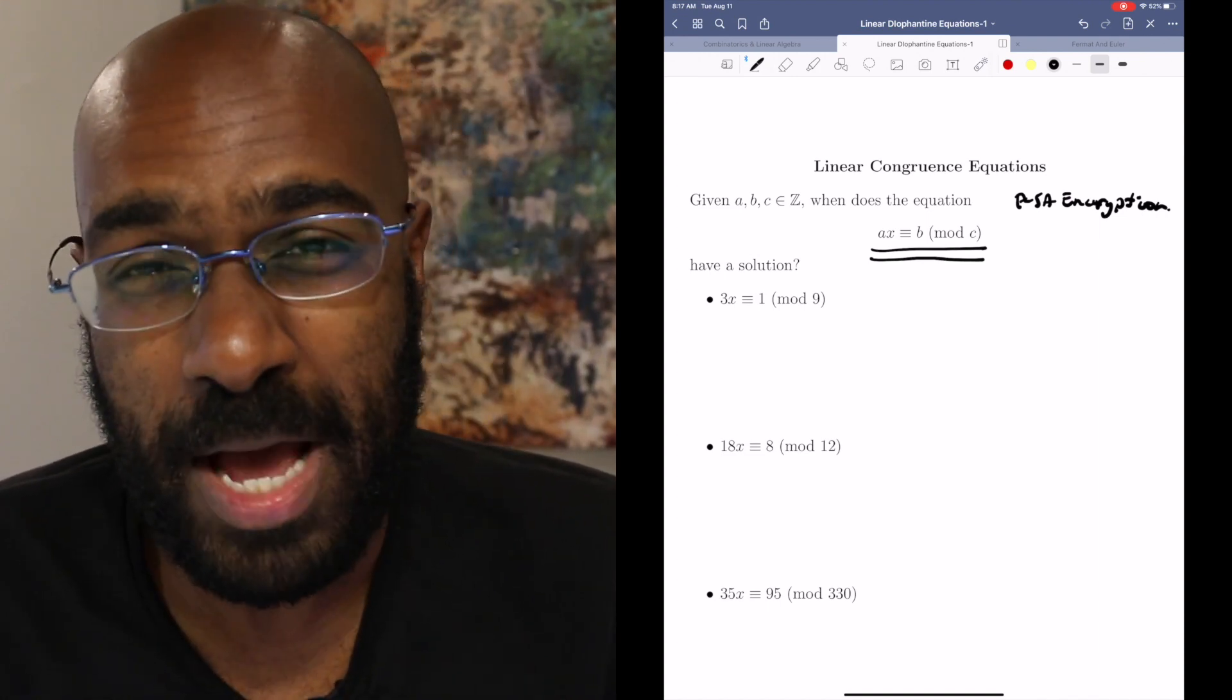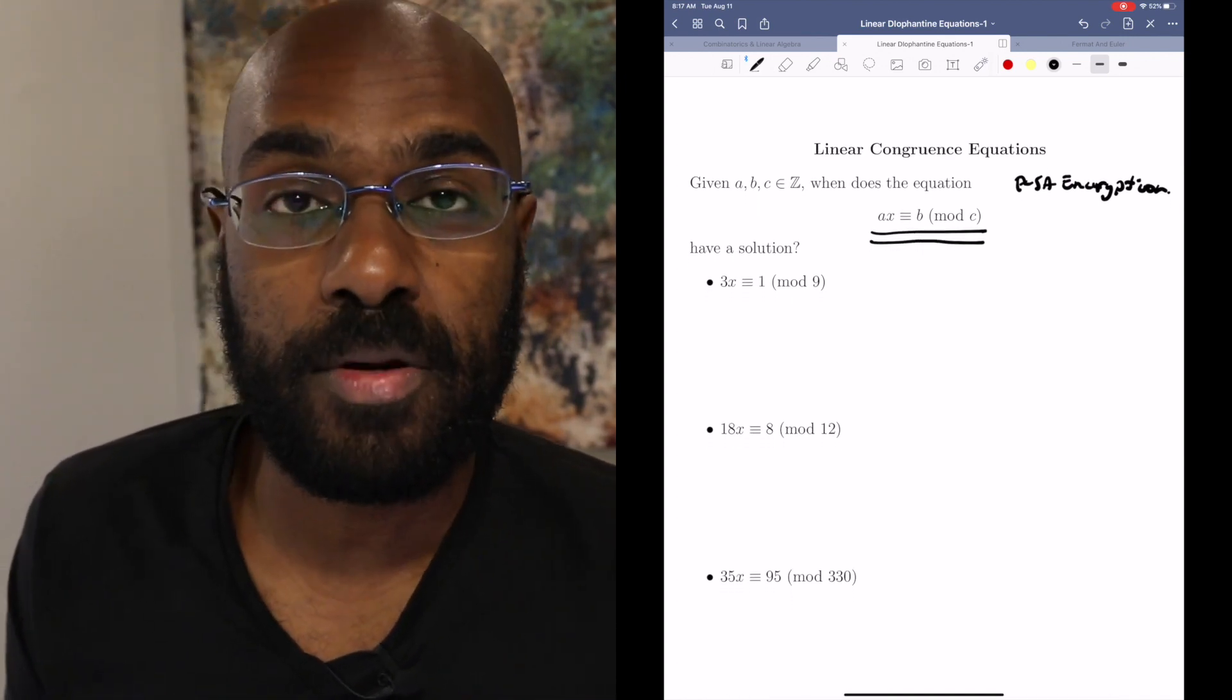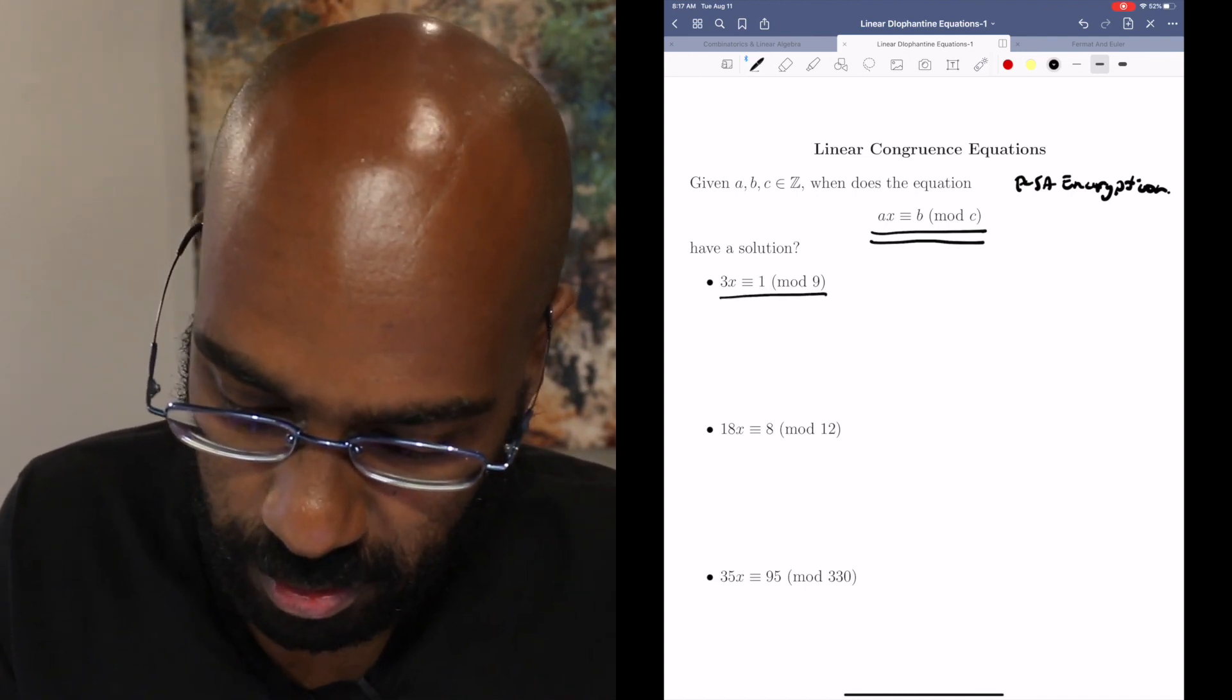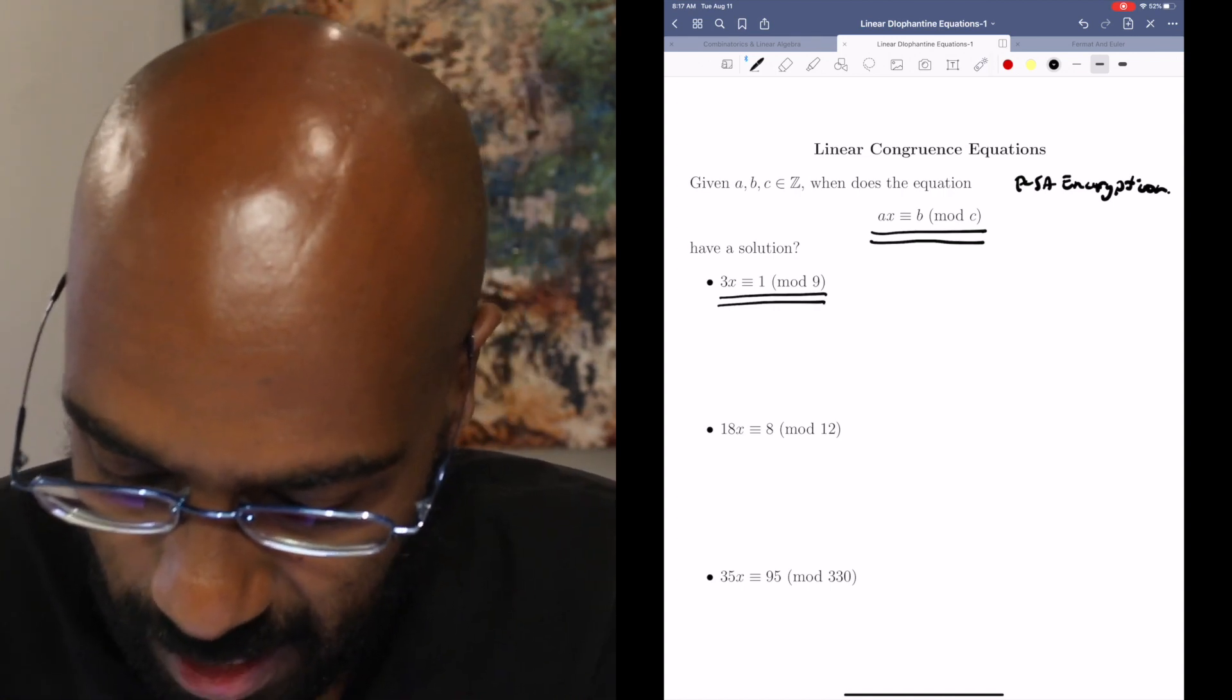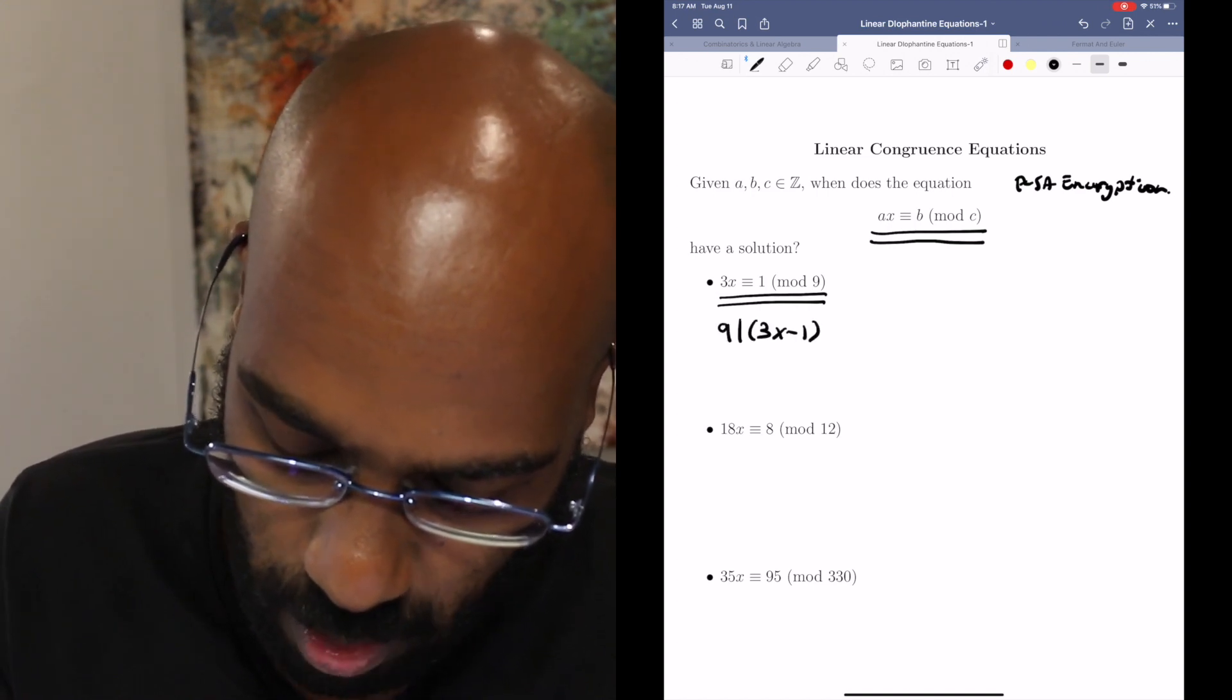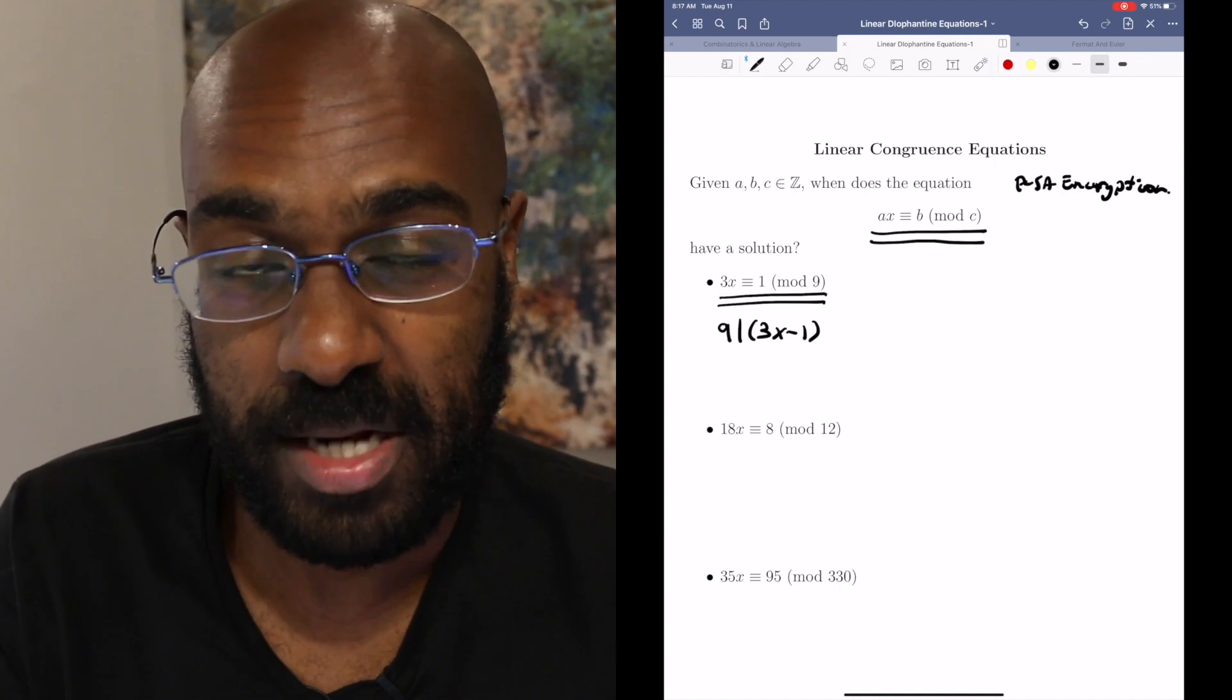So let's play around with some examples to get a sense of what solutions might look like to be able to come up with a theorem maybe of what a solution set would look like in general. So let's start with this equation right over here, or congruence equation. 3x is congruent to 1 mod 9. So recalling what this means, this means that 9 would have to divide 3x minus 1. So our question is, is there a value of x for which 9 divides 3x minus 1? Or in other words, 3x minus 1 is a multiple of 9.